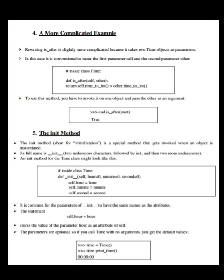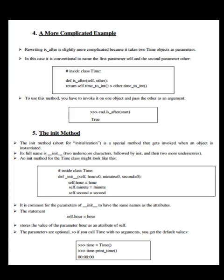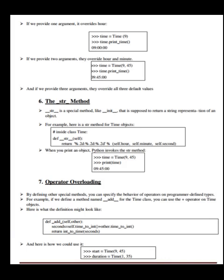The fifth topic is the init method. The init method, short for initialization, is a special method that gets invoked when an object is instantiated. Its full name is __init__ — two underscore characters followed by init and then two more underscores. An init method for the Time class might look like this. It is common for the parameters of init to have the same names as the attributes. The statement self.hour = hour stores the value of the parameter hour as an attribute of self. The parameters are optional, so if you call Time with no arguments, you get the default values. If you provide one argument it overrides hour, two arguments override hour and minutes, and three arguments override all three default values.